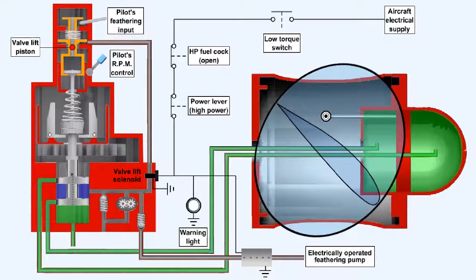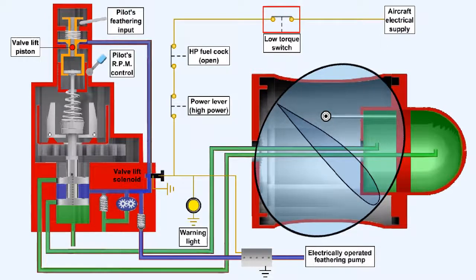This diagram shows an auto feather system installed on a typical double-acting propeller arrangement for a turboprop engine. It consists of an additional oil pressure line supplied from an electrically operated feathering pump to the underside of a valve lift piston in the feathering mechanism. Control over this oil pressure is provided by an electrically operated solenoid valve. In the event of an engine failure, and provided the engine controls are set to the high power configuration, a low torque signal will complete the auto feather circuit and energize the valve lift solenoid and feathering pump.